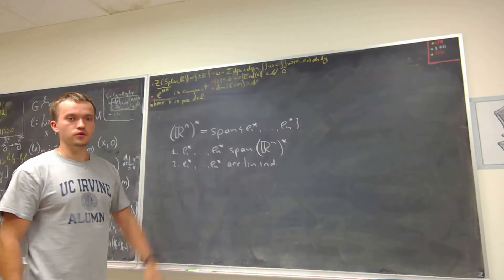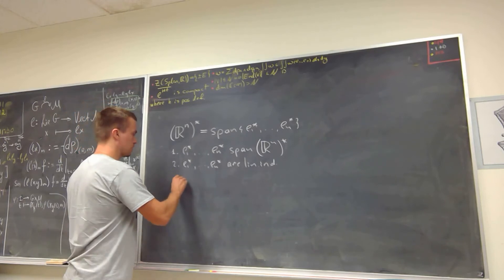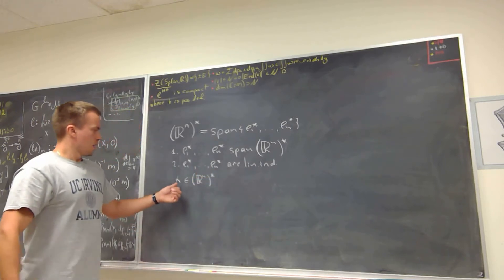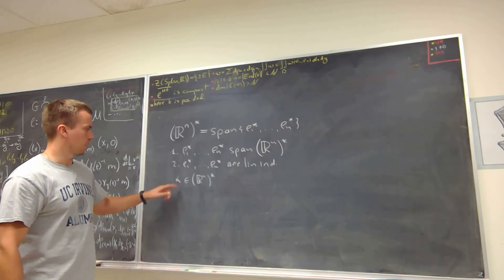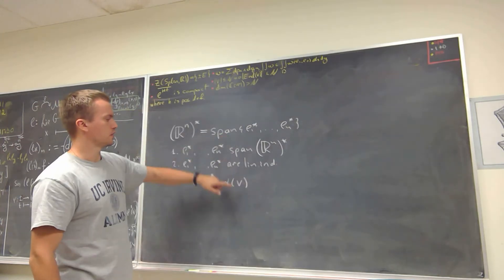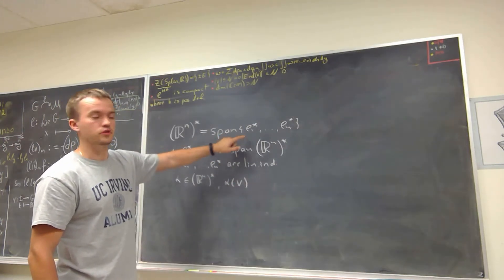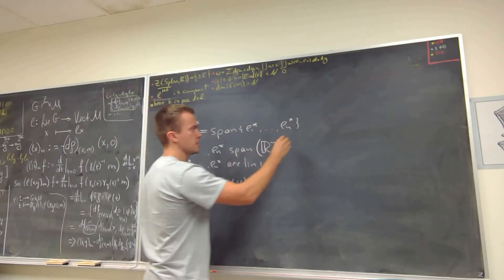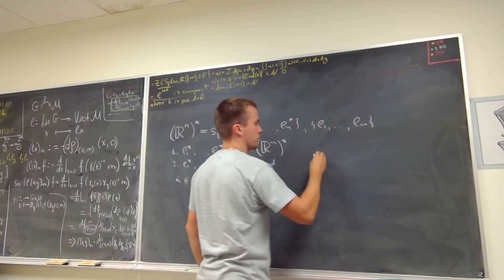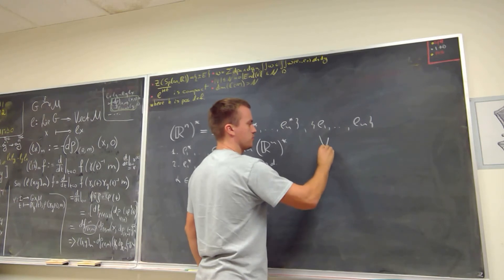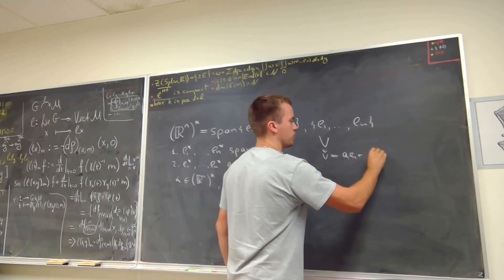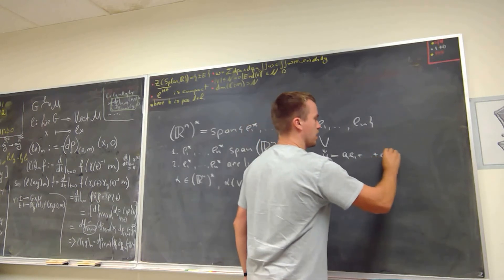To show the first fact, we take any linear functional α in our vector space. We then relate our linear functional to some vector v, knowing that v can be written in terms of the basis — since the dual basis came from the basis e1 through en — so we find coefficients a1 through an such that v equals a1·e1 plus up to an·en.